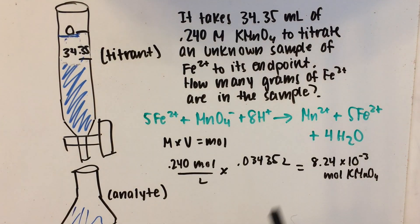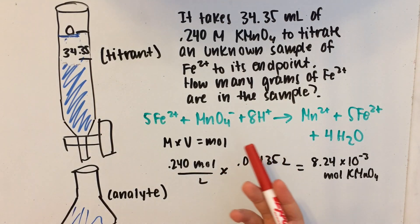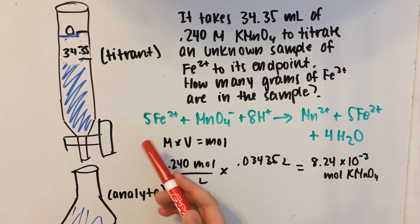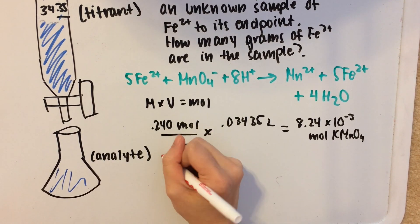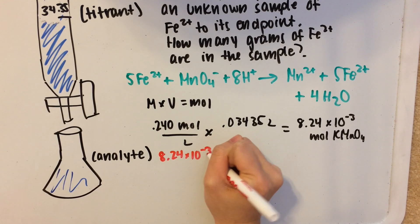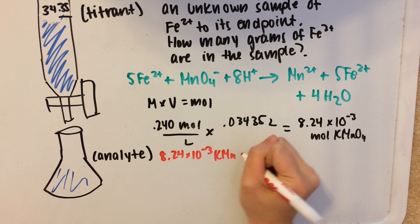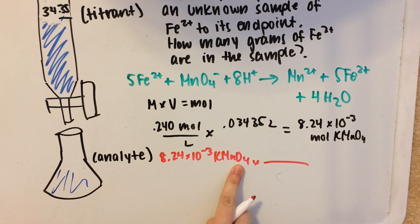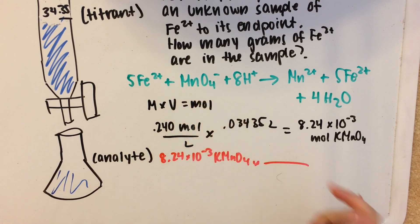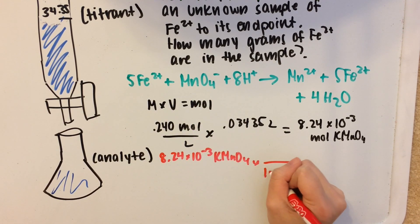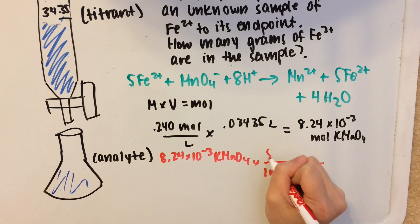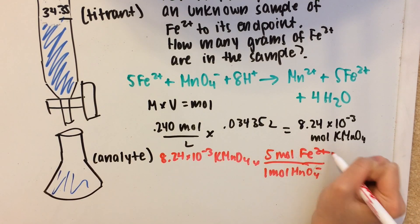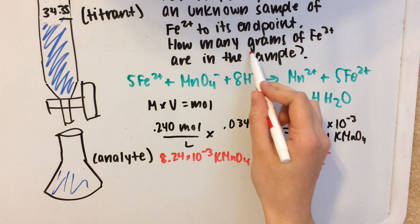Now we'll use the balanced equation to get the amount of moles of Fe2+. We have 8.24 times 10 to the negative 3 moles of KMnO4, and in every mole of KMnO4 there is 1 mole of MnO4−. So we can say that for every 1 mole of MnO4−, there are 5 moles of Fe2+. That gives us the moles of Fe2+, but the problem asks for grams.